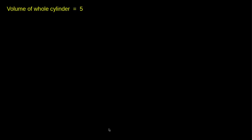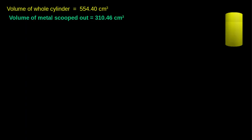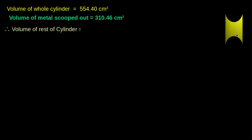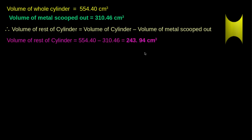So, we know that the volume of the whole cylinder is 554.40 cm³ and the volume of metal scooped out is 310.46 cm³. Therefore, the volume of the rest of the solid, that is the remaining cylinder, is given by the volume of the cylinder minus the volume of metal scooped out. On substitution, we get the volume of the rest of the cylinder as 243.94 cm³.